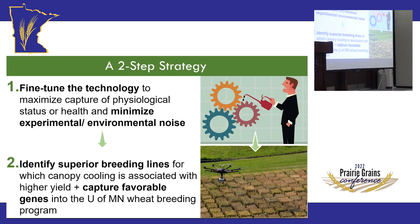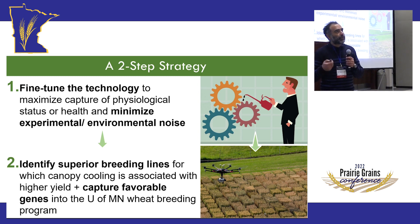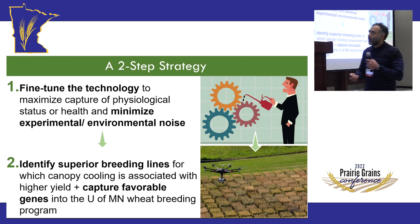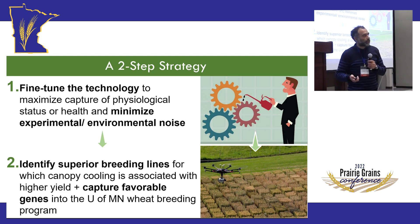We had a two-step strategy. First, to fine-tune the technology — the core idea is to improve the signal-to-noise ratio, because there are many reasons for field variation in temperature such as microclimate and feedback loops. We want to capture biological signatures as opposed to environmental ones, so there's algorithmic and data analysis work involved. Then, hopefully identify superior breeding lines for which canopy cooling is associated with higher yield, and capture favorable genes from the University of Minnesota wheat breeding program.